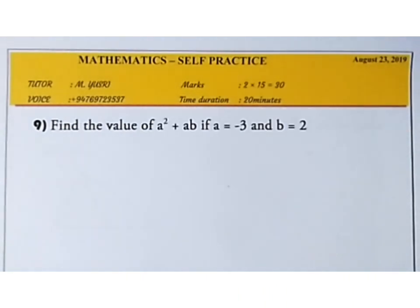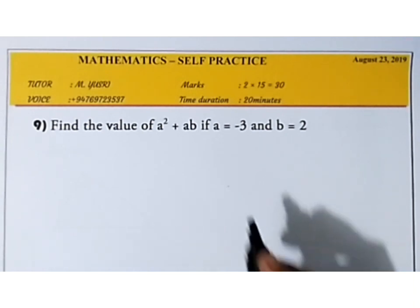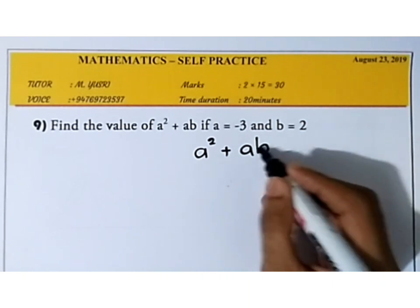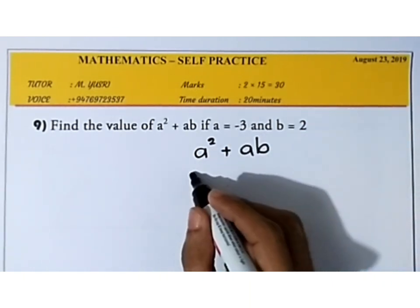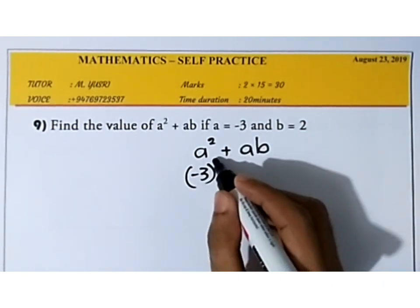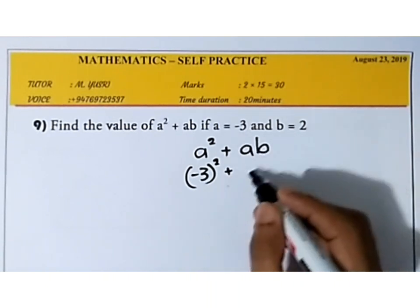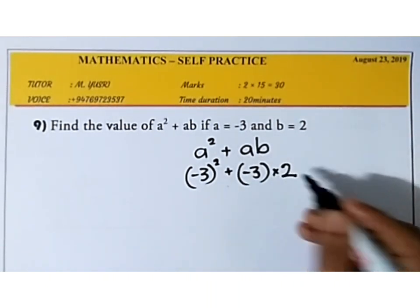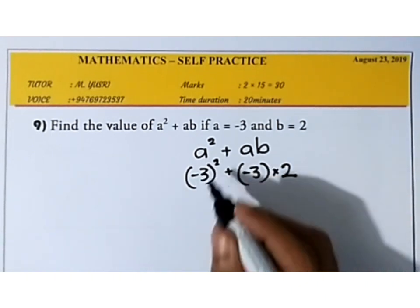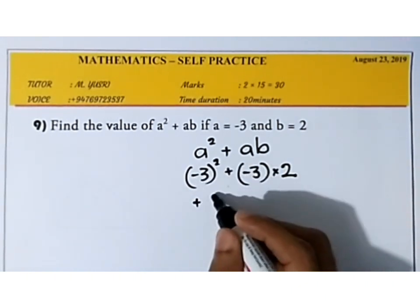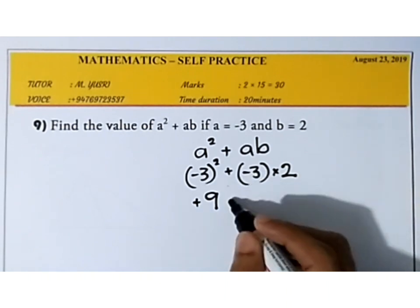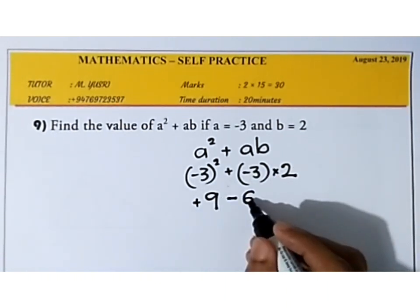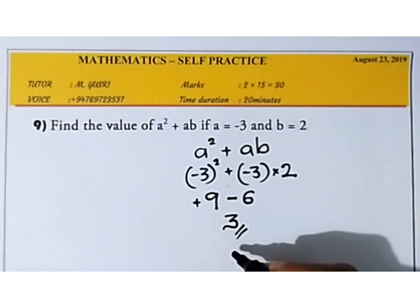Find the value of a² + ab where a = −3 and b = 2. Substituting: (−3)² + (−3)(2). Minus squared gives positive: 3² = 9. Then plus times minus is minus: (−3)(2) = −6. So 9 − 6 = 3. The answer is 3.